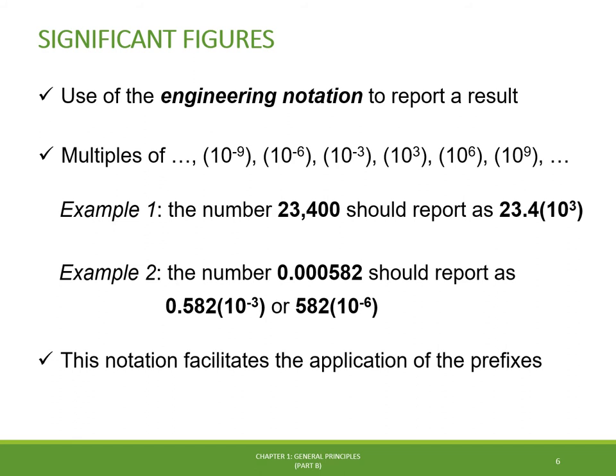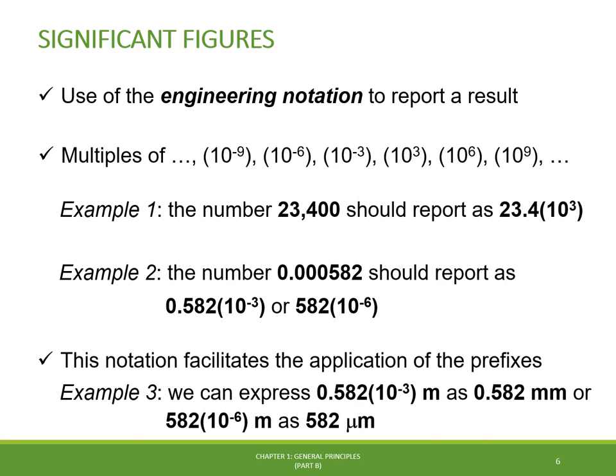The benefit of using engineering notation is that it facilitates the application of prefixes. For example, if 0.582 times 10 to the power minus 3 is in meters, we can represent it as 0.582 millimeters. Or if 582 times 10 to the power minus 6 is in meters, then the prefix notation would be 582 micrometers.